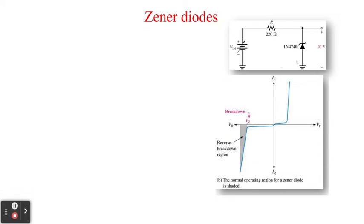This is the basic circuit of a Zener diode. We have the input voltage on the left — take note, this is DC — and we have RS of 220 ohms here. This is just an example. This is the Zener diode 1N4740, and the output voltage here is equal to 10 volts. There is no load resistor connected in this example.